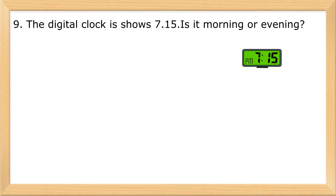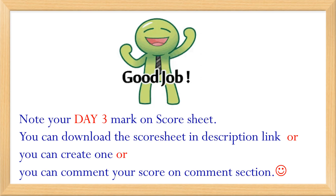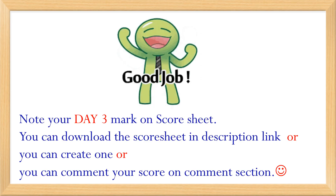9. The digital clock shows 7:15. Is it morning or evening? Evening. 10. What time will the clock show in one hour? 11:10. Outstanding.